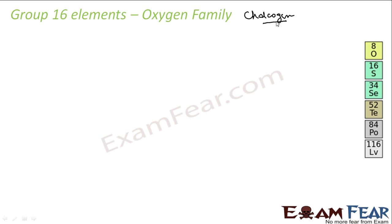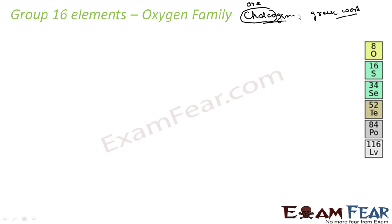This chalcogen word is derived from a Greek word. The 'chalco' part means ore — typically copper — and 'gen' means generation or formation, like the word generator. So group 16 elements, that is the oxygen family, are also called chalcogens, derived from the Greek word meaning ore generator.